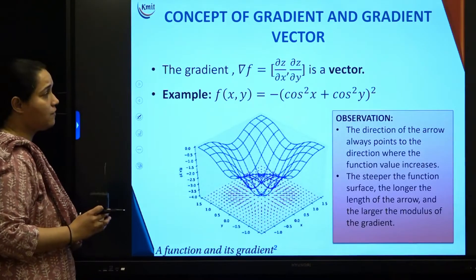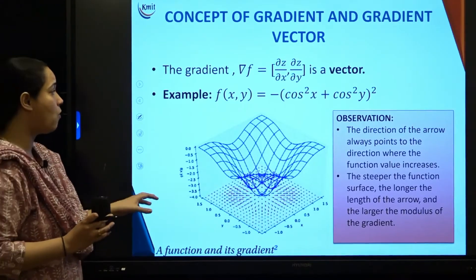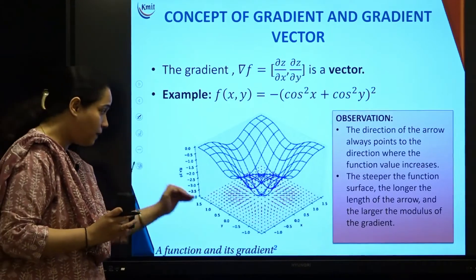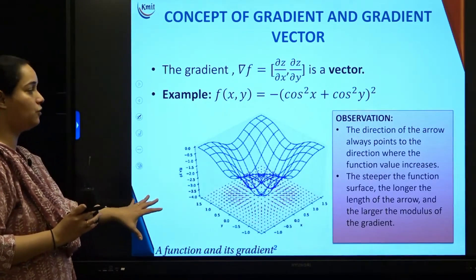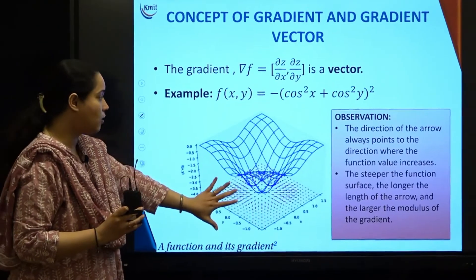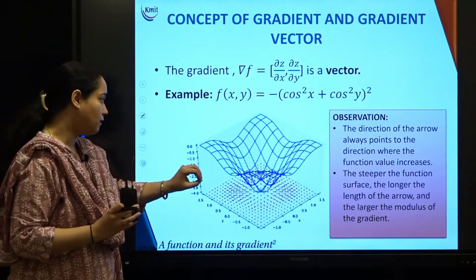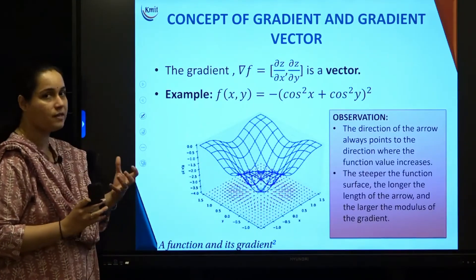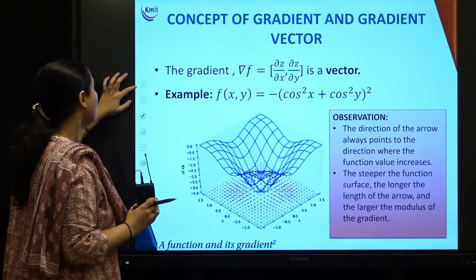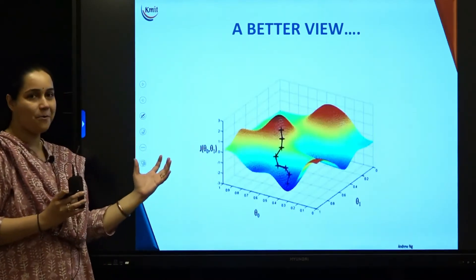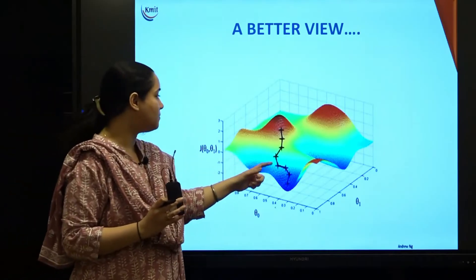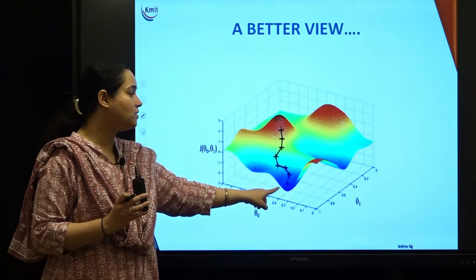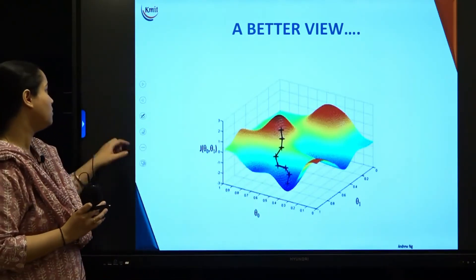From this figure, the direction of the arrow always points in the direction where the function value is increasing. The steeper the function surface, the longer the arrow, meaning the larger the modulus of the gradient. The calculation proceeds until it reaches its minimum value, as seen in this figure.